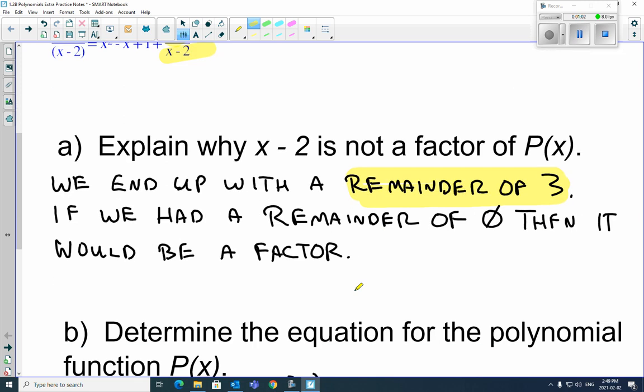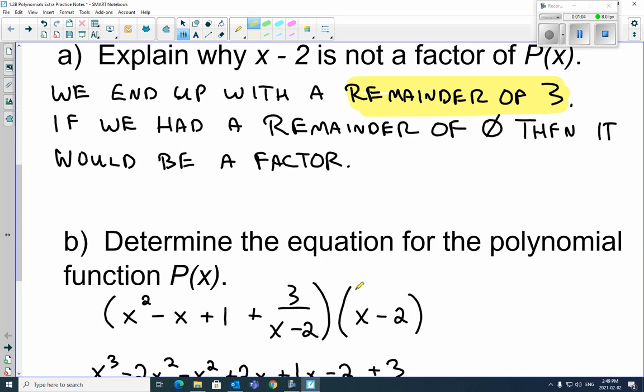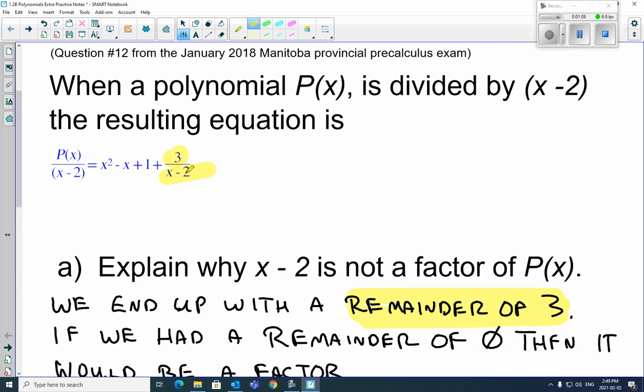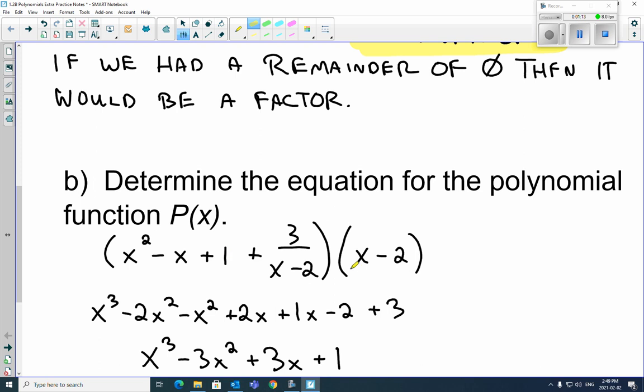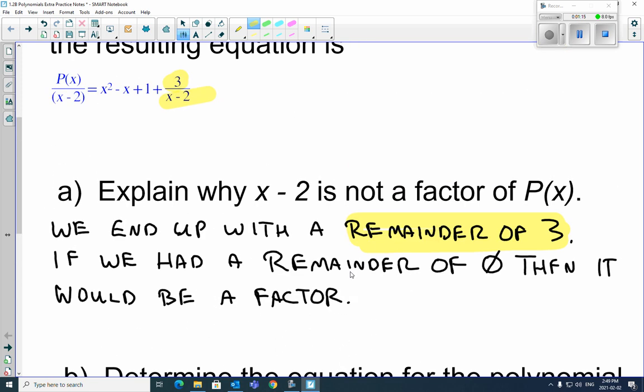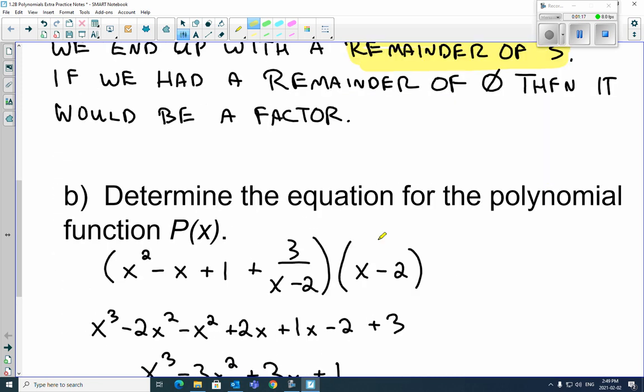So then the next part was determine the equation. So we've got to go back. Well, what we do is we look at the original one. So it's x squared minus x plus 1 plus 3 over x minus 2 right there. And we have x minus 2, right, because that's one of the factors there. So there's the x minus 2.